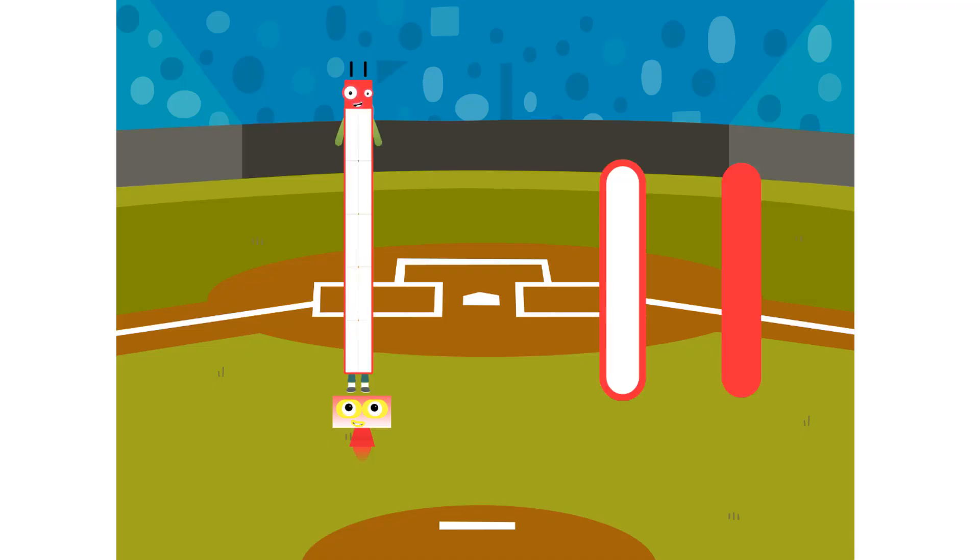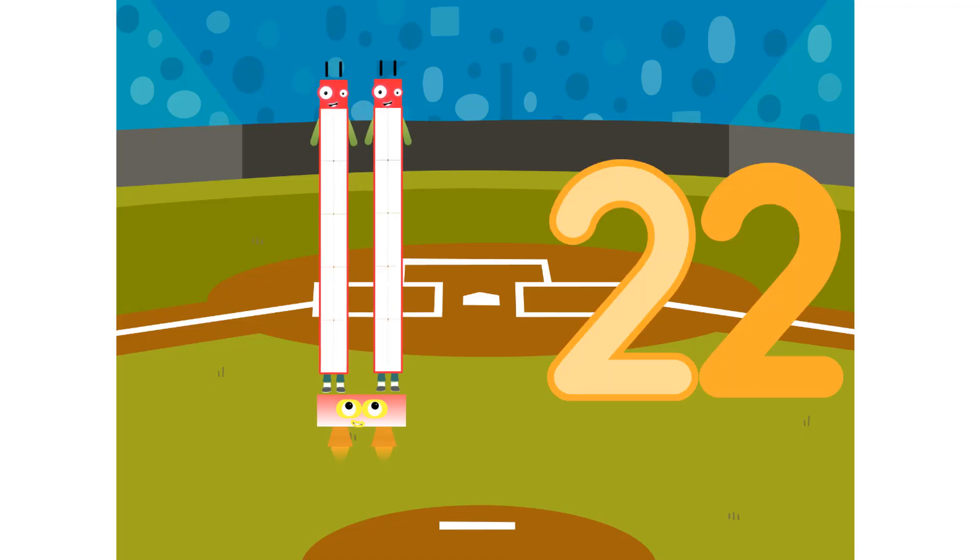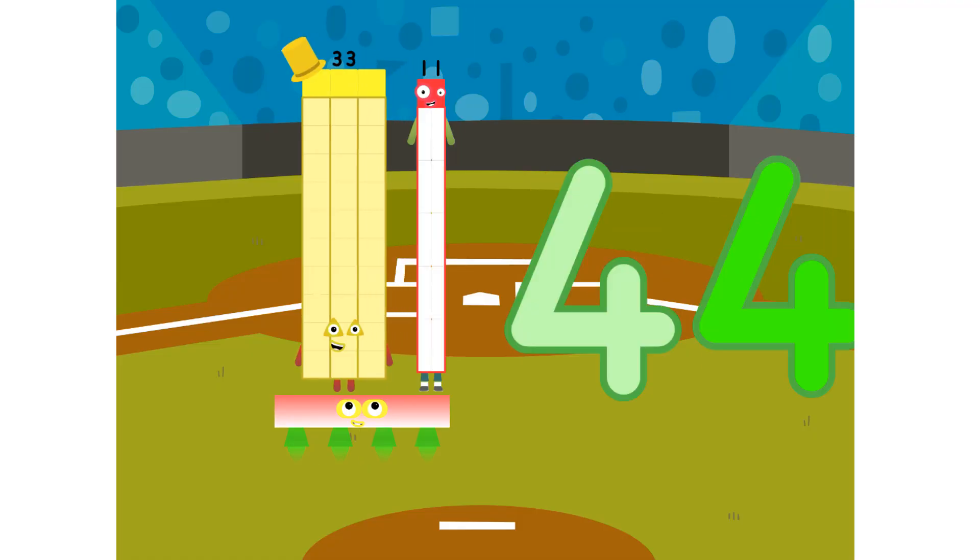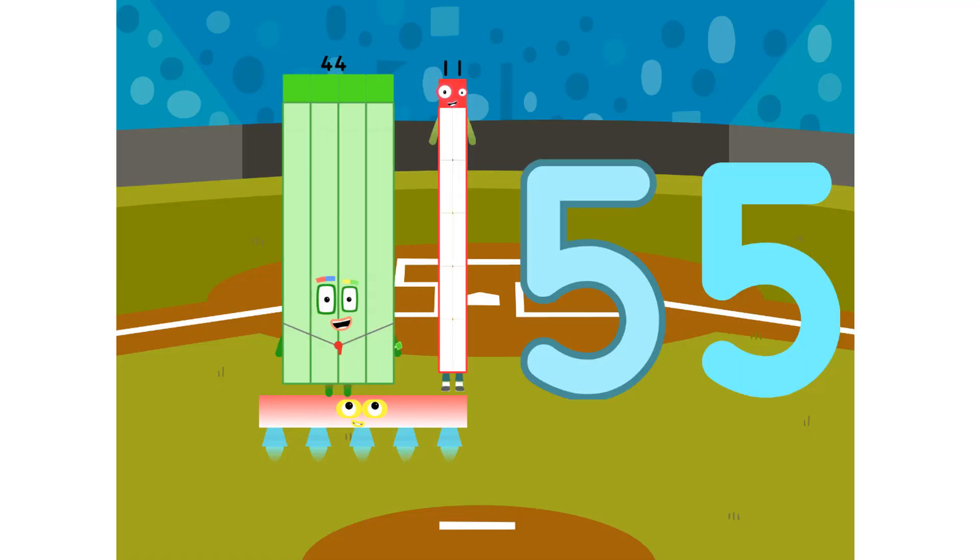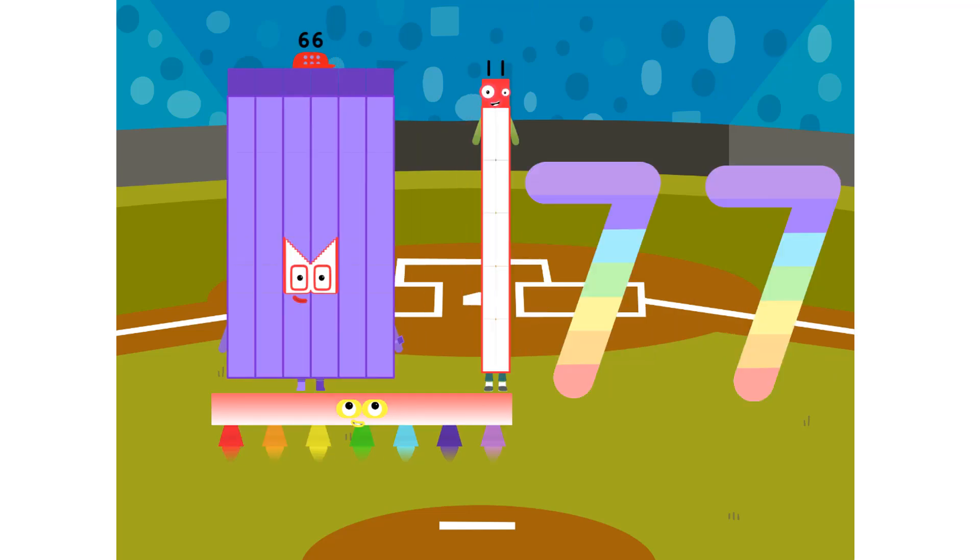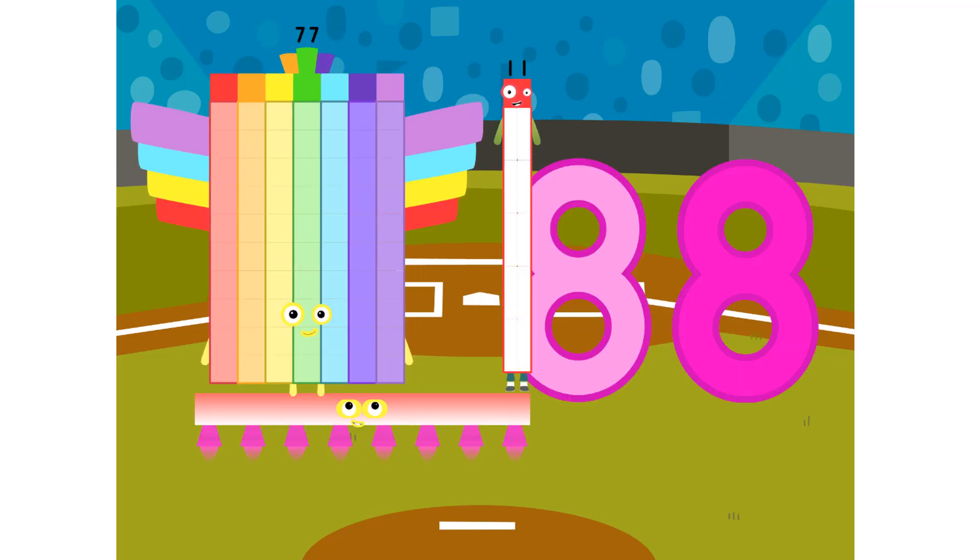One-eleven is eleven. Two-elevens are twenty-two. Three-elevens are thirty-three. Four-elevens are forty-four. Five-elevens are fifty-five. There's sixty-six and seventy-seven then. Eight-elevens are eighty-eight. Nine-elevens are ninety-nine. And ten-elevens are one-hundred and ten.